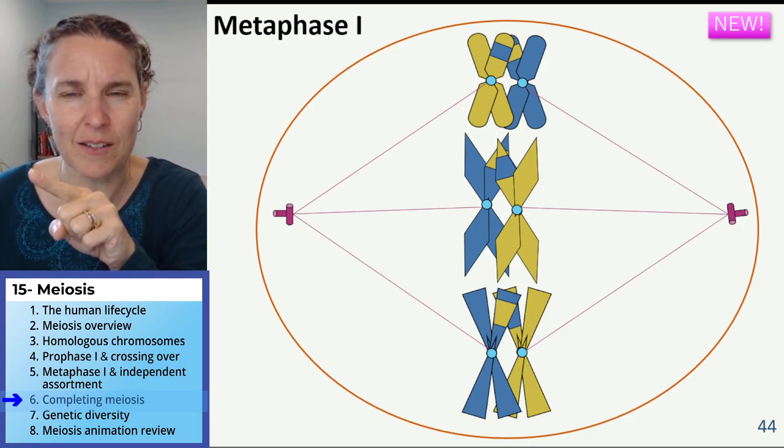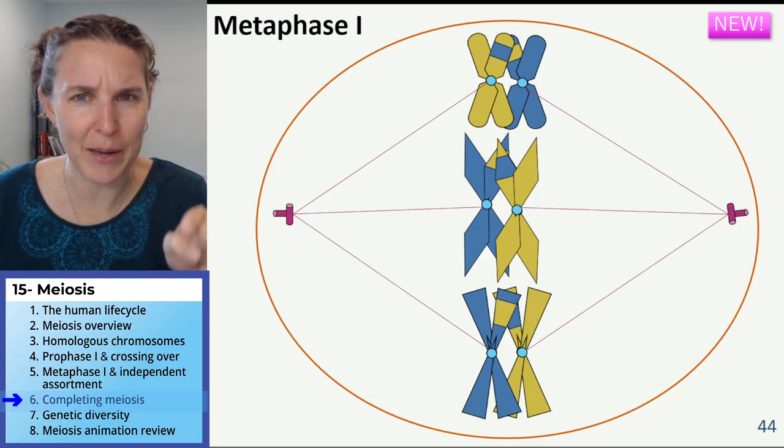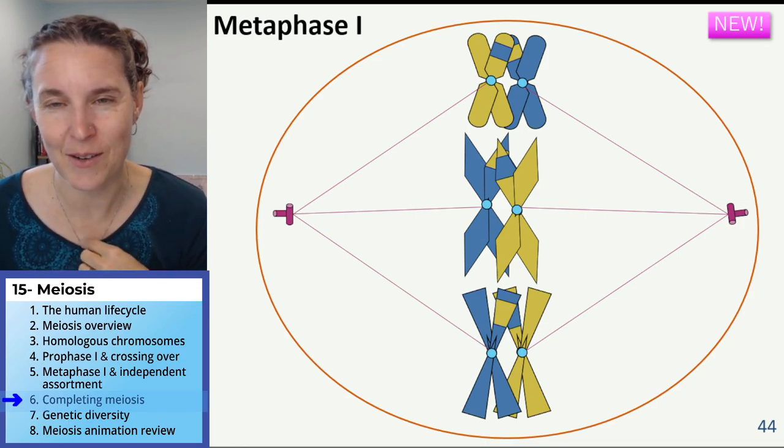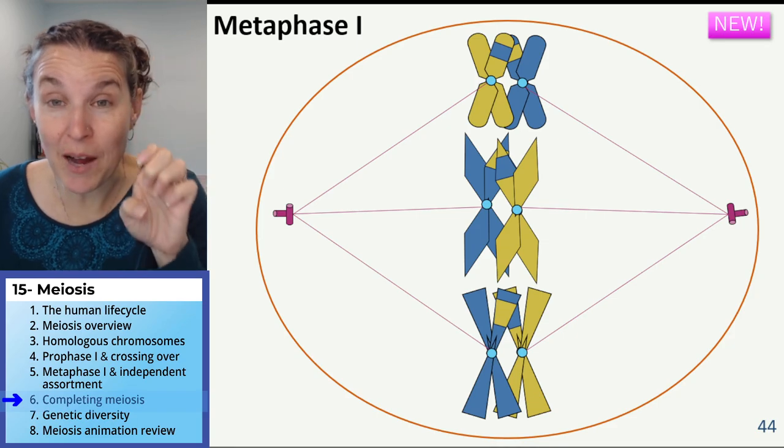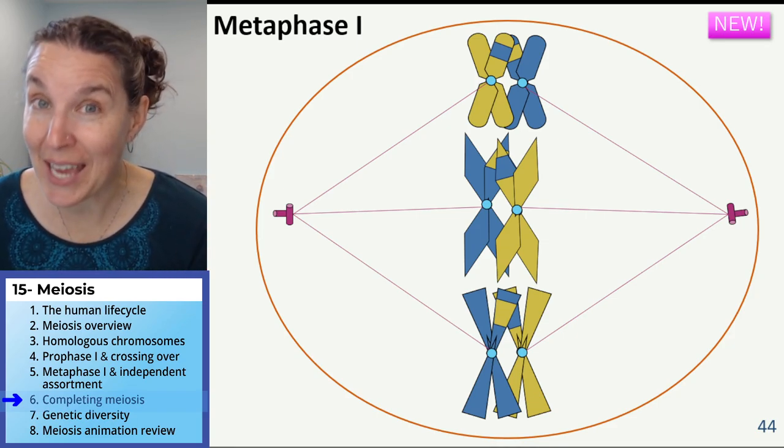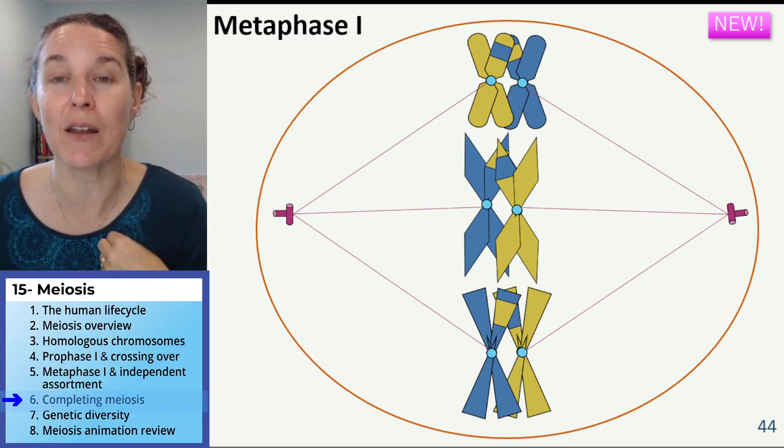Two-squared is two to the second power. Two to the third power. I don't know how to say that. Somebody help me. But two to the third power is eight, which means there are eight possible gametes resulting just from independent assortment in metaphase.